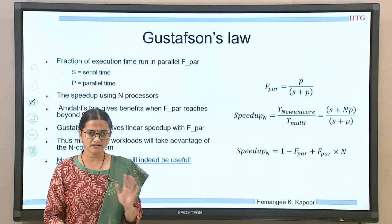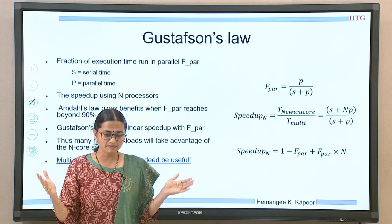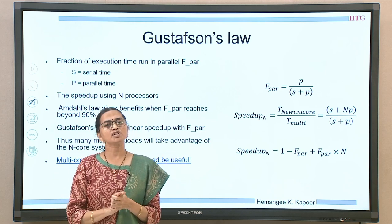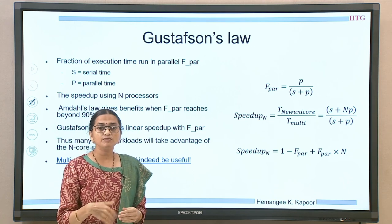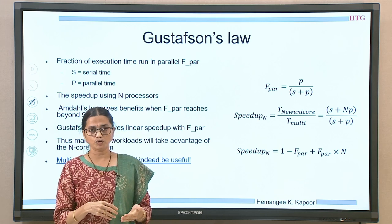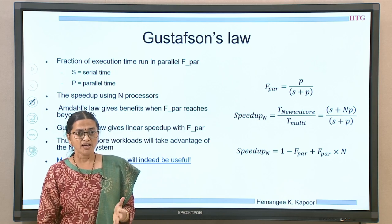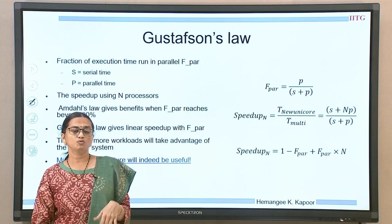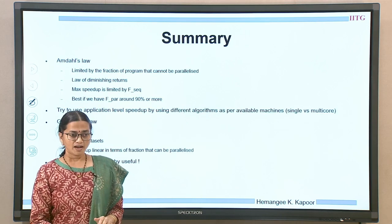The same formulas are given again in a neater manner. Amdahl's law gave us better speedup only if F_par reached around 90% or more. Gustafson's law says that more and more cores will give you a linear speedup because we can do more work on these n cores — assign better parallelizable workloads and use these n processors. Thus, the multi-core architectures which we plan to design and which do exist will indeed be useful to us.